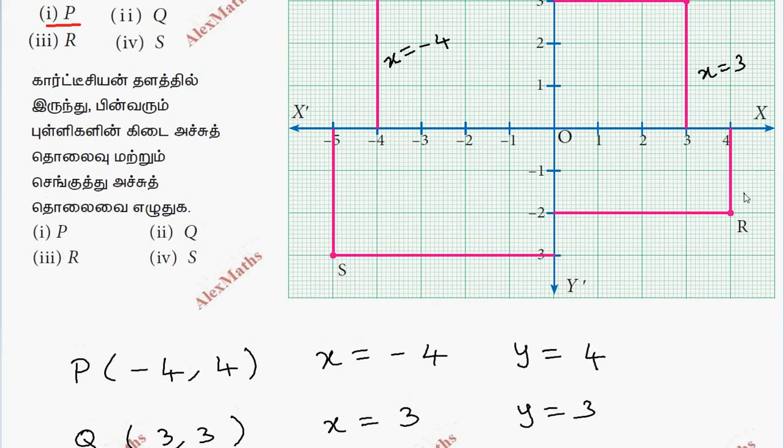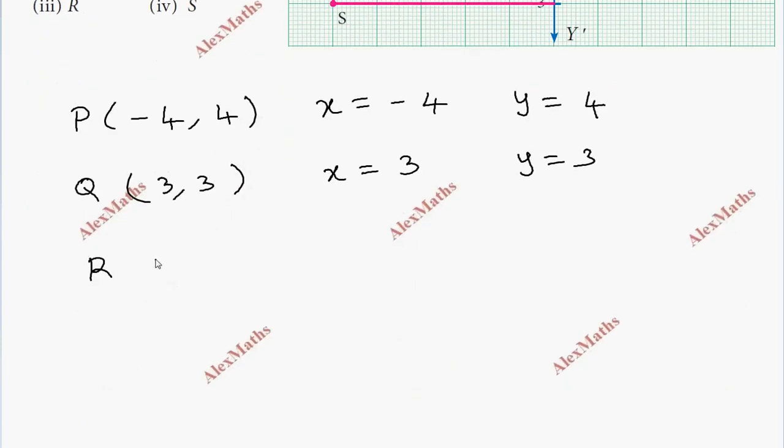Point R is at this level on the vertical line, so x is equal to 4. On the horizontal line, y is equal to minus 2. So the coordinates are 4 comma minus 2. The abscissa is 4 and the ordinate is minus 2.